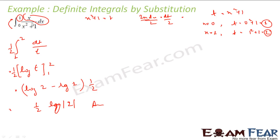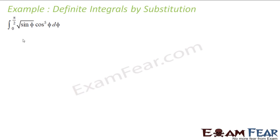The catch here is: do not take the same values in the upper and lower limit. The moment you change the variable from x to t, you have to take the corresponding values of t for those values of x. When x = 0, t was 1, so I took 1. When x = 1, my t came out to be 2, so I took 2. That is the catch.